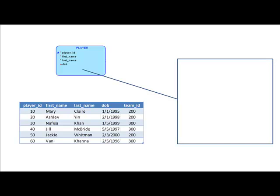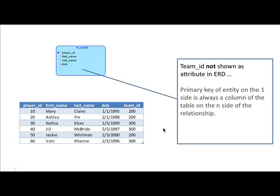An important point to observe: although the players table has a field called team ID, that field is not being shown as an attribute in the player's entity type. It's just a convention. In any one-to-many relationship — in this case, a team-to-player relationship that's one-to-many — automatically the primary key of the entity type on the one side is always an attribute of the entity type on the many side.